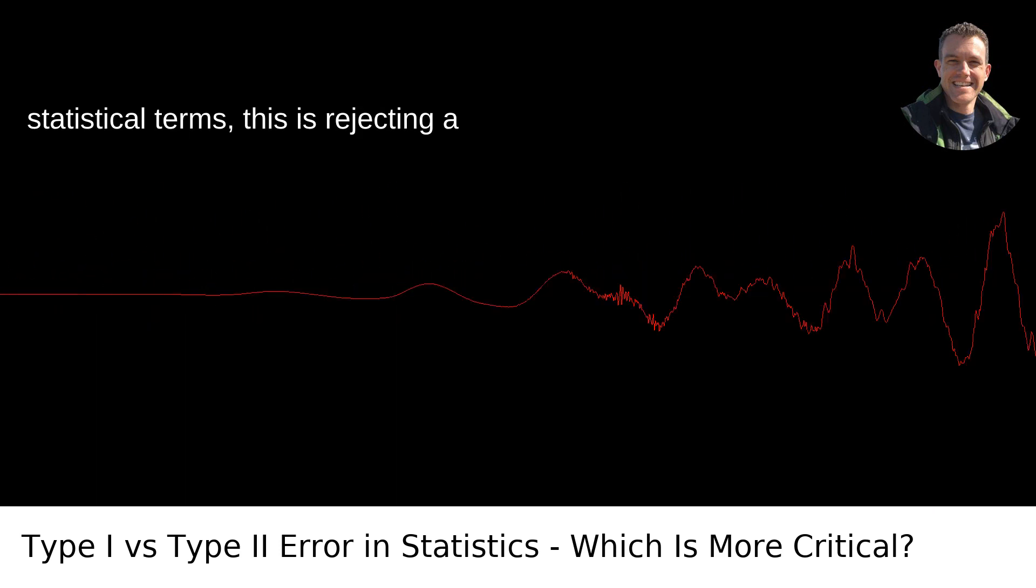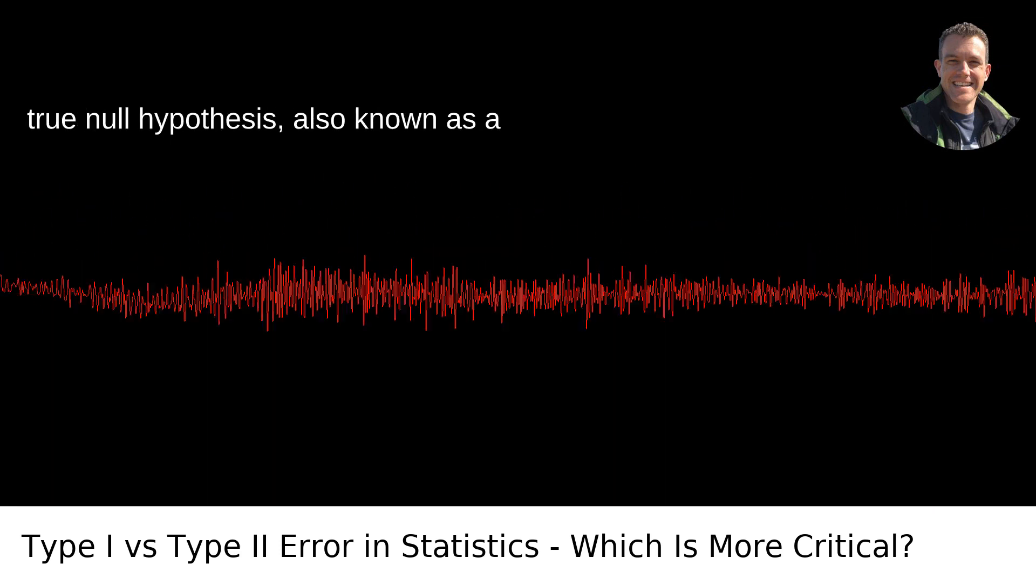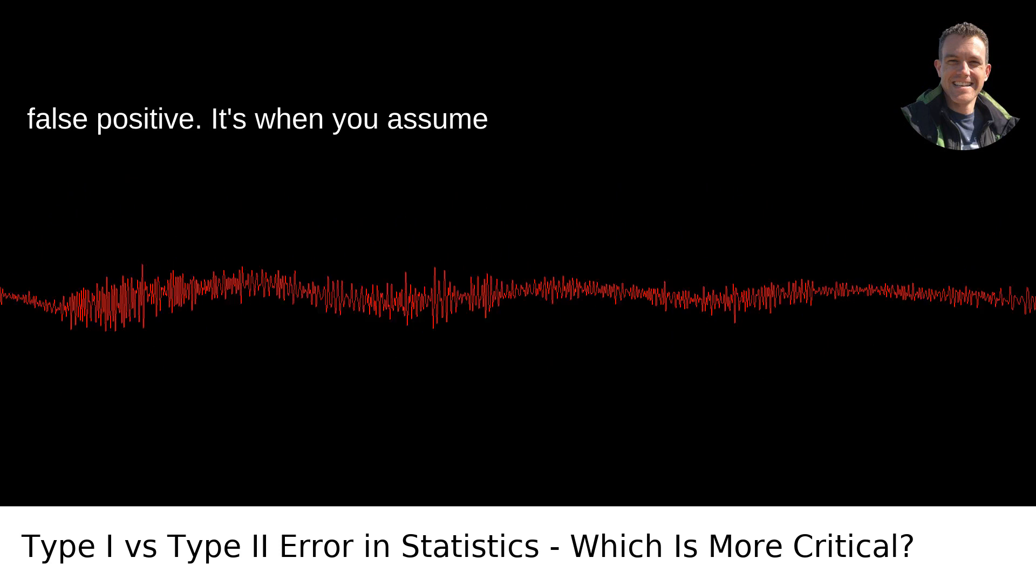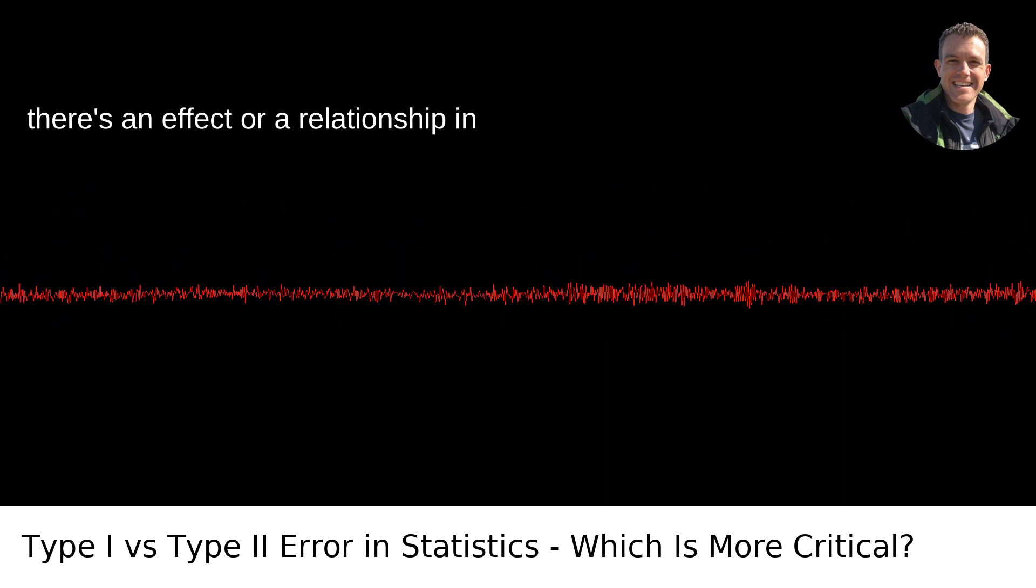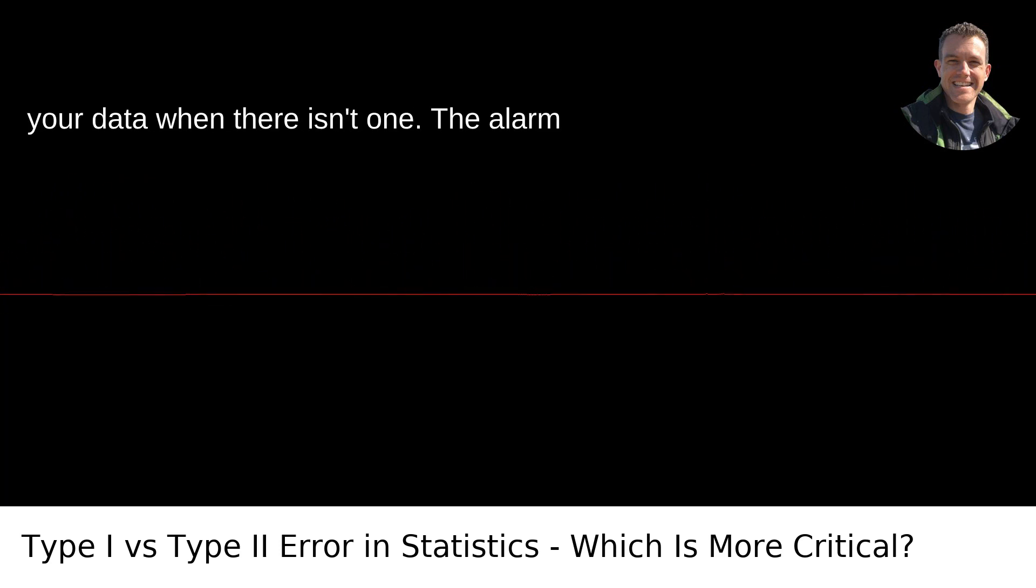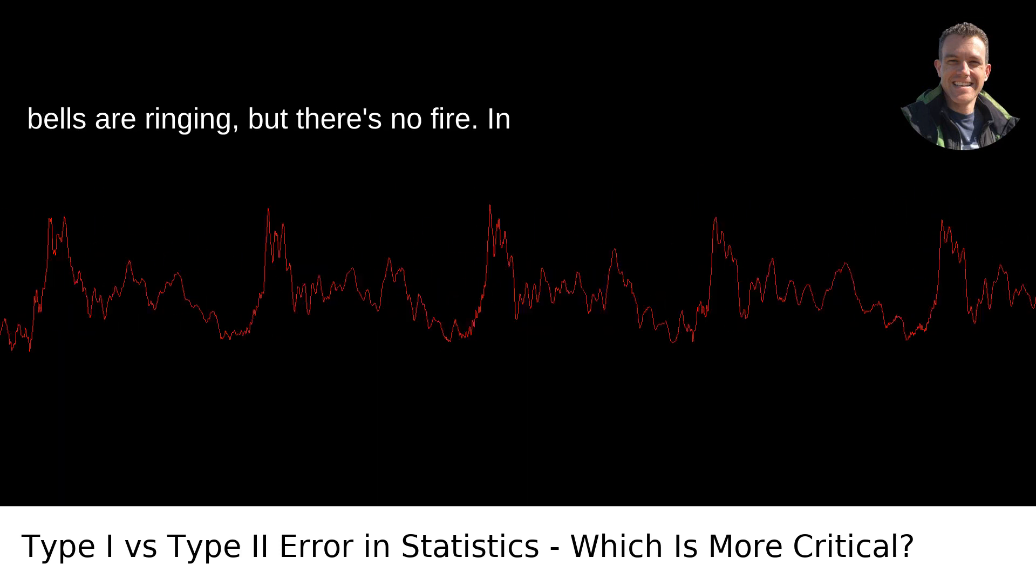In statistical terms, this is rejecting a true null hypothesis, also known as a false positive. It's when you assume there's an effect or a relationship in your data when there isn't one. The alarm bells are ringing, but there's no fire.